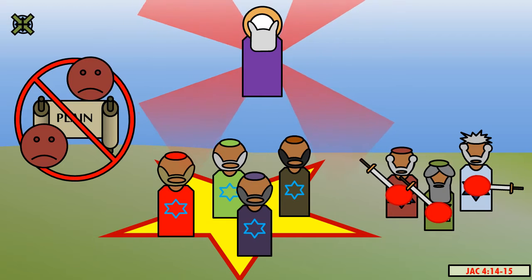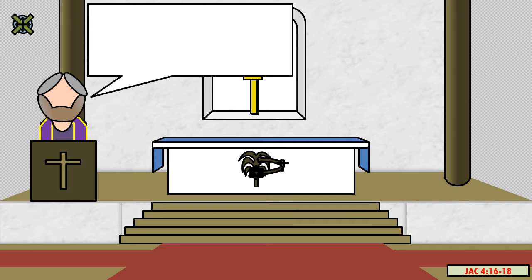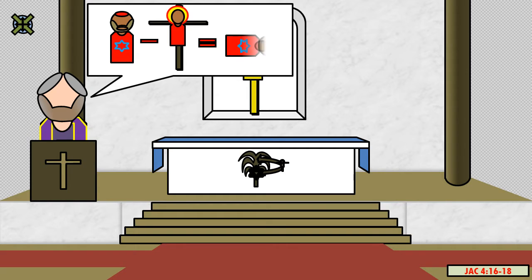And now I, Jacob, am led on by the Spirit unto prophesizing, for I perceive by the workings of the Spirit which is in me, that by the stumbling of the Jews, they will reject the stone upon which they might build and have safe foundation. I think he means Jesus. But behold, according to the Scriptures, this stone shall become the great and the last and the only sure foundation upon which the Jews can build. And now, my beloved, how is it possible that these, after having rejected the sure foundation, can ever build upon it, that it may become the head of their corner? Behold, my beloved brethren, I will unfold this mystery unto you, if I do not, by any means, get shaken from my firmness in the Spirit, and stumble because of my over-anxiety for you.